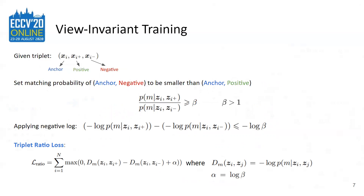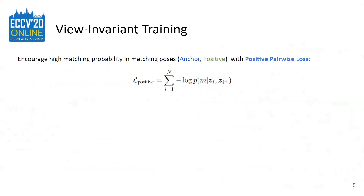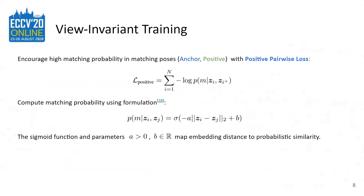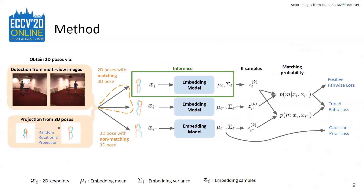In triplet ratio loss, distance is measured by the matching probability and beta is a hyperparameter. In this way, we push the matching probability of positive pairs to be higher than negative pairs. A second loss, the positive pairwise loss, encourages the matching probability of the positive pair to be high, since we know that the positive pairs are from matching 3D poses. We compute matching probability using a formulation based on the sigmoid function, mapping embedding distance to probabilistic similarity. The entire framework uses three losses based on embedding distributions with sampling: triplet ratio loss, positive pairwise loss, and prior loss. The Gaussian prior loss is based on a unit Gaussian, which regularizes embedding magnitude and prevents variance collapse.